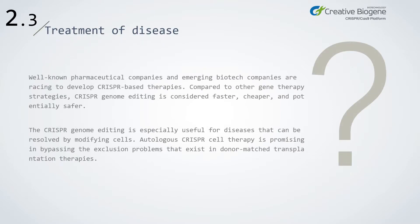Well-known pharmaceutical companies and emerging biotech companies are racing to develop CRISPR-based therapies. Compared to other gene therapy strategies, CRISPR genome editing is considered faster, cheaper, and potentially safer, and is especially useful for diseases that can be resolved by modifying cells. Autologous CRISPR cell therapy is promising in bypassing the exclusion problems that exist in donor-matched transplantation therapies.